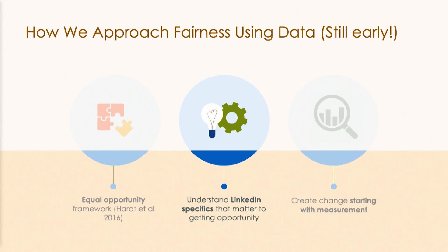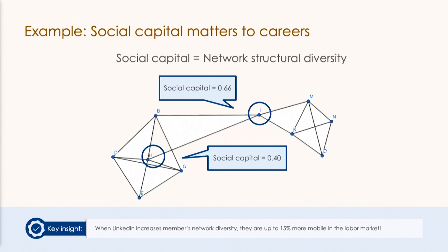The second dimension is thinking about what things actually help individuals get opportunities. Historical social research helps us understand this — we know that trust, status, and access to information help people get opportunities. One research example we did showed that social capital matters to career outcomes. In the LinkedIn setting, it's not just about how many connections you have, but really about how diverse your connections are. Individuals who have a more structurally diverse network are actually more likely to be mobile in the labor market.